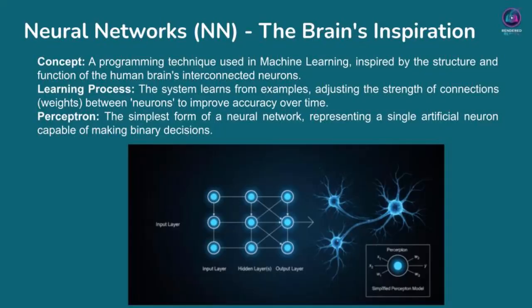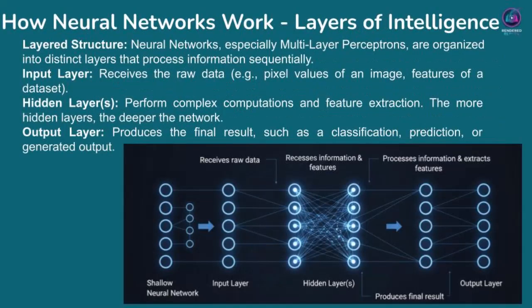On this slide, we delve a bit deeper into how neural networks are structured and how they process information, specifically focusing on their layers of intelligence. Most neural networks, especially those used in modern machine learning, are organized into distinct layers that handle different stages of information processing. Think of it like an assembly line for data.